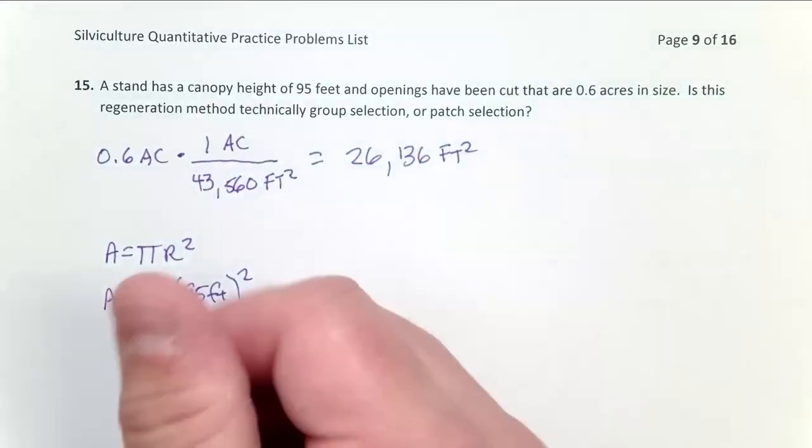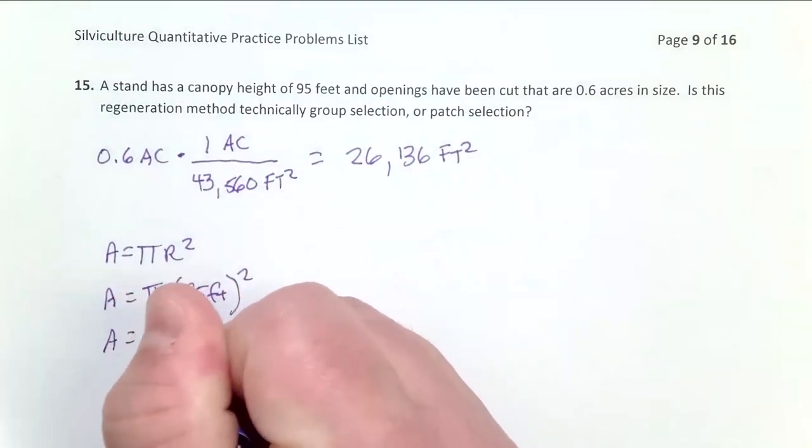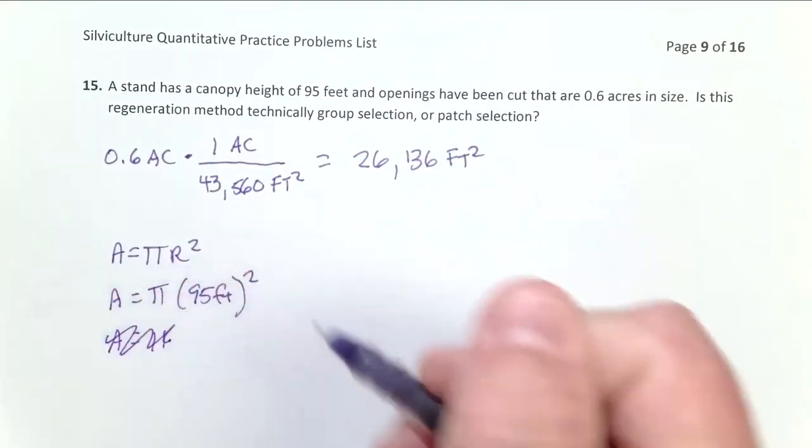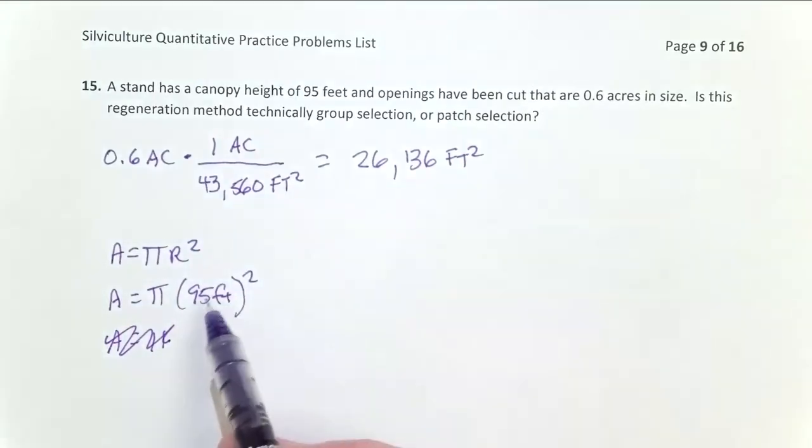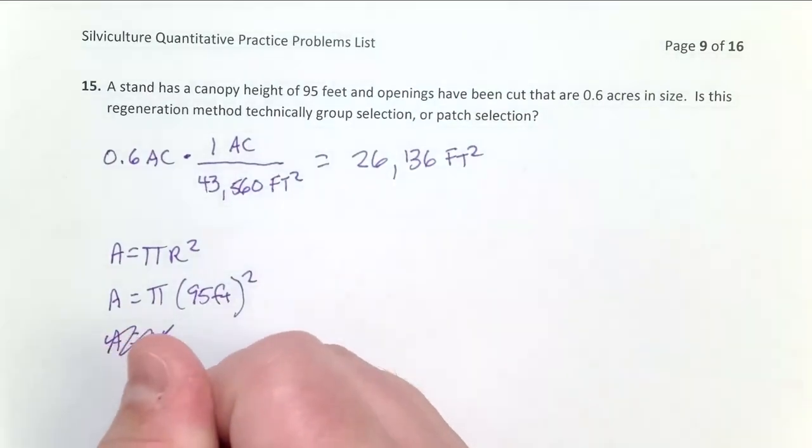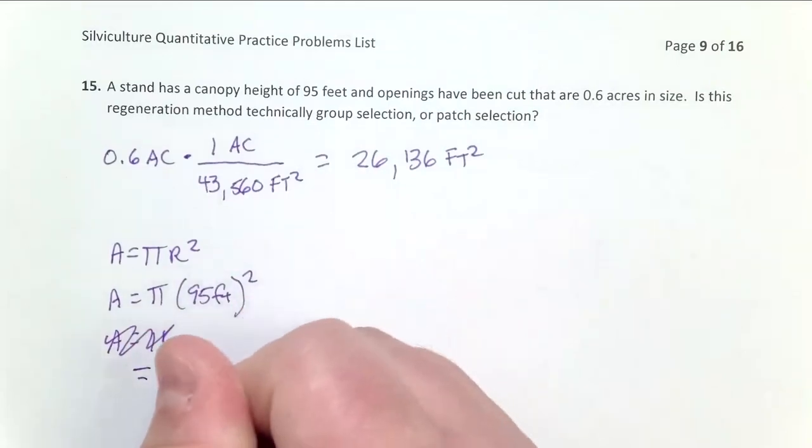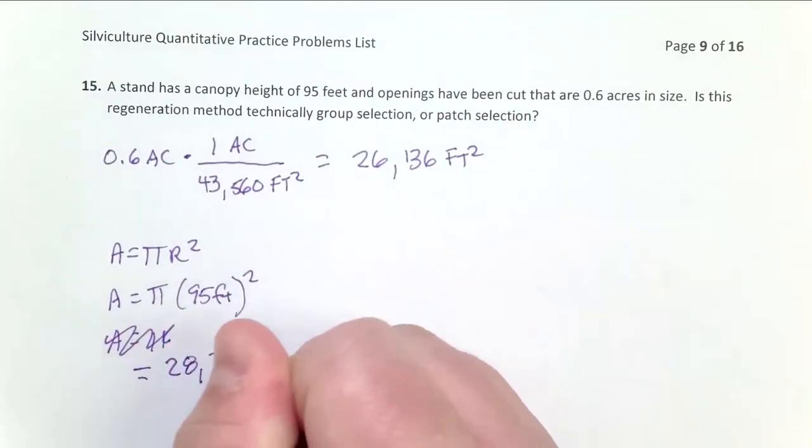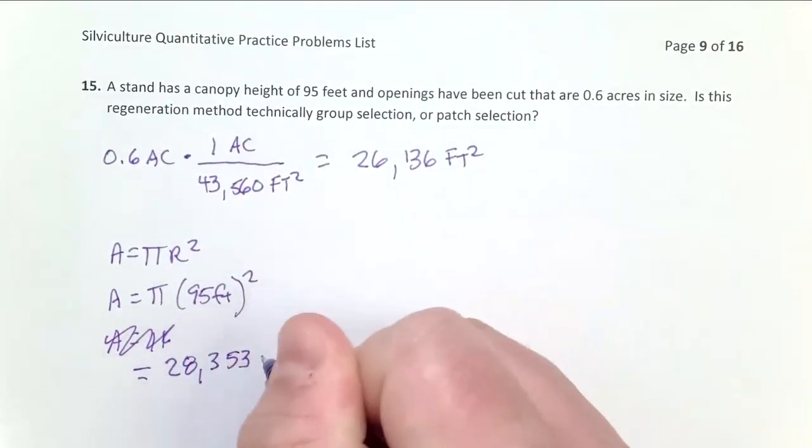I simply put this in my calculator. I square 95 feet. That gives me units of feet squared, and then I take that number multiplied by pi, 3.14159. And this ends up equaling 28,353 feet squared.